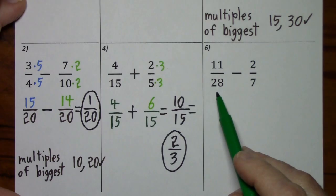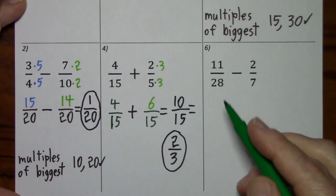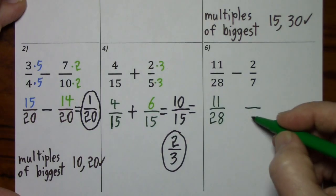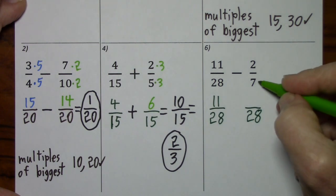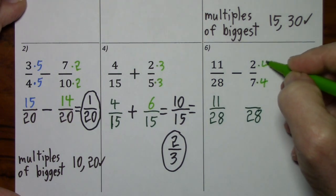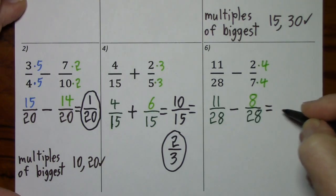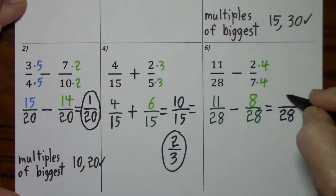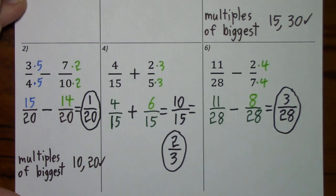Looking at number 6, 28 will be our common denominator because 7 goes into 28. This fraction we won't have to change, but we're going to have to change from 7 to 28 — we multiply by 4 and multiply by 4. We keep that denominator and subtract the numerators. 3 twenty-eighths cannot be simplified; there's no common factor, so that's our answer.